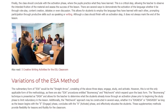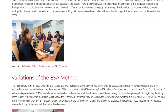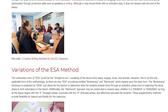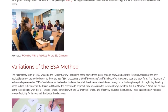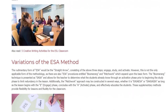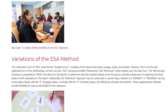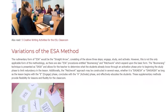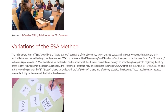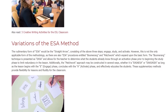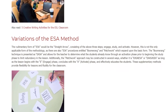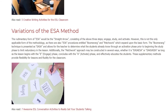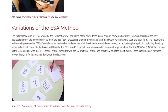Variations of the ESA Method. The rudimentary form of ESA would be the straight arrow, consisting of the above three steps: engage, study, and activate. However, this is not the only applicable form of the methodology, as there are also ESA procedures entitled boomerang and patchwork, which expand upon the basic form. The boomerang technique is presented as EASA and allows for the teacher to determine what the students already know through an activation phase prior to beginning the study phase, to limit redundancy in the lesson.